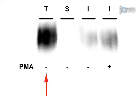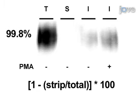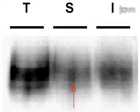A representative immunoblot from the reversible biotinylation procedure on the dopamine transporter is shown here. The strongest signal is the total amount of surface protein prior to internalization, seen in the total lane (T). The strip control (S) should ideally be close to blank and display high strip efficiency. Strip efficiency is calculated using band density measurements in the following formula. The strip in this experiment was 99.8% efficient. Strips greater than or equal to 90% efficiency are optimal, and results below this level should be discarded. An example of a poor strip shows a visible band in the strip lane with a strip efficiency of only 34%.